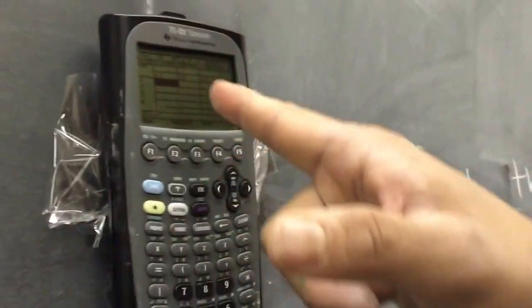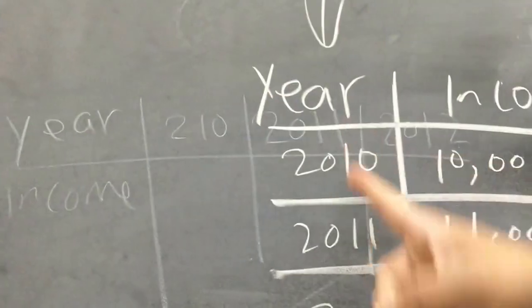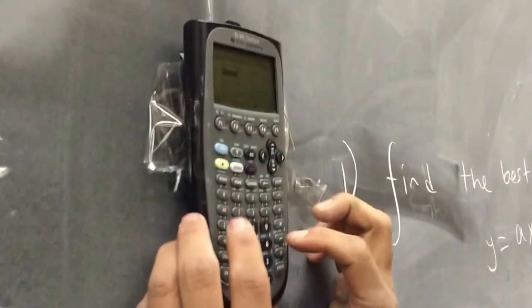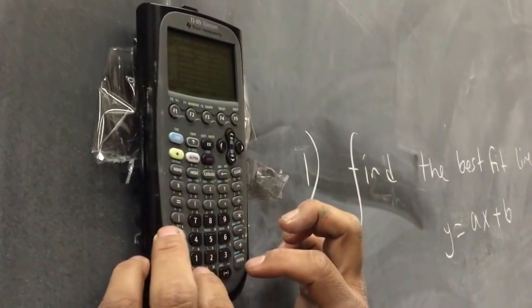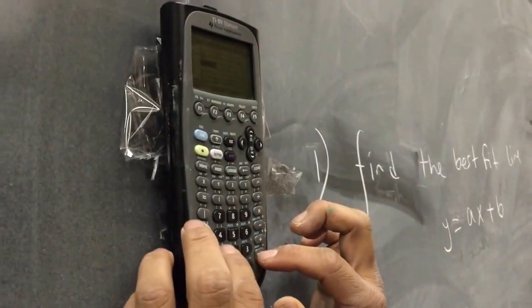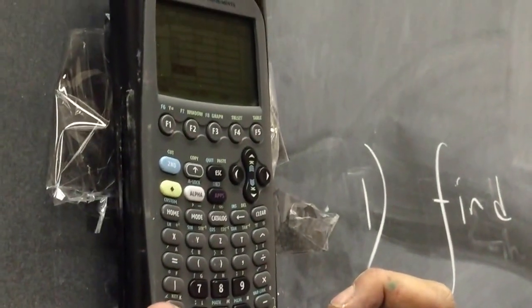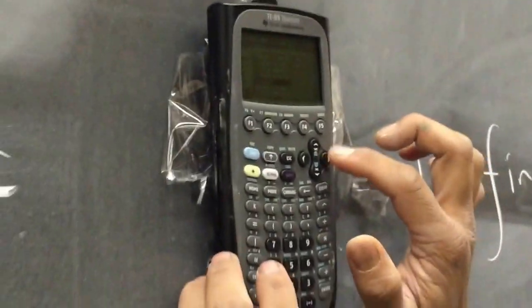Now on the C1, I'm going to plug in the year. So instead of 2010, I'm going to write 10, then enter 11, enter 12, enter 13, enter 14, enter. On the other side,